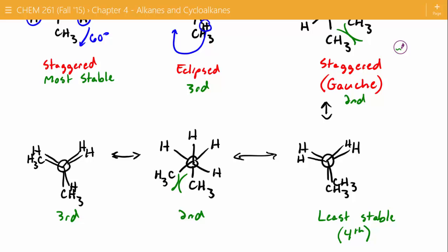Staggered is almost always more stable than eclipsed — eclipsed is very destabilizing. For the four potential stability options, we have: first most stable, second most stable, third most stable, and least stable. Occasionally you will come into conformations that, even though they look different on a page, have the exact same energy. So I'll let you hold on to that as just an in-class activity.